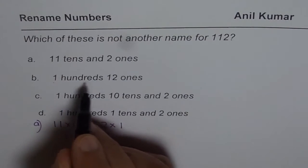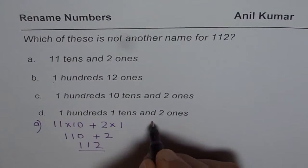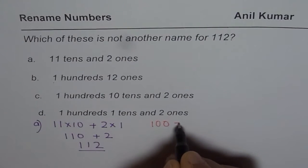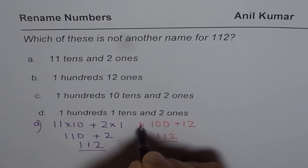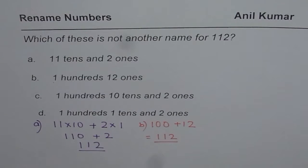The next one is 1 hundreds, 12 ones. So we can write this as 1 hundreds plus 12 ones and that equals 112, so this is B, that is also correct.